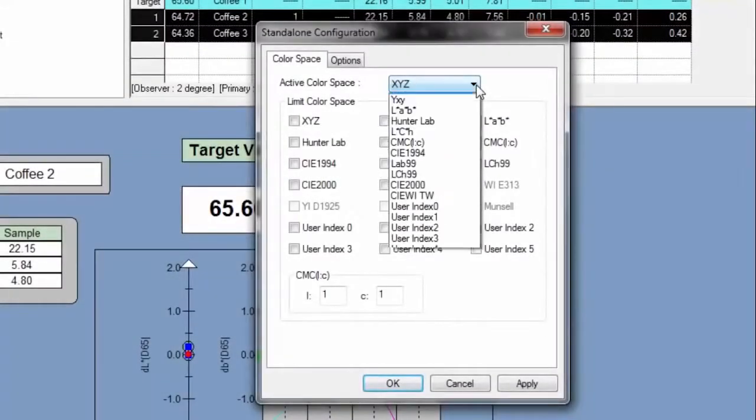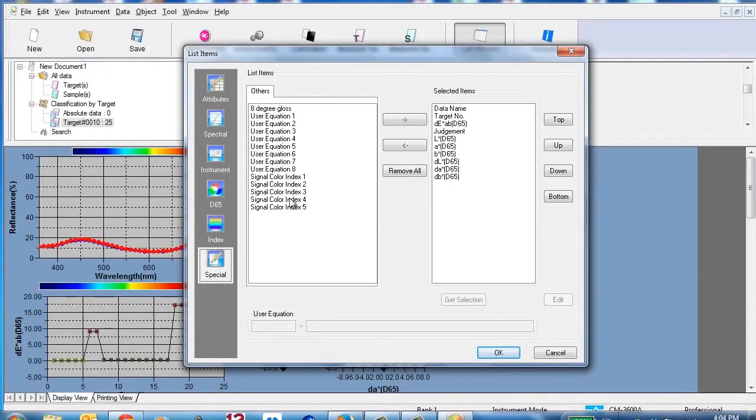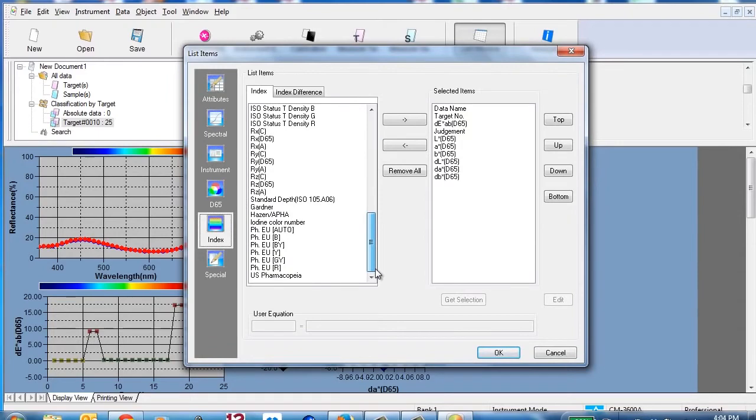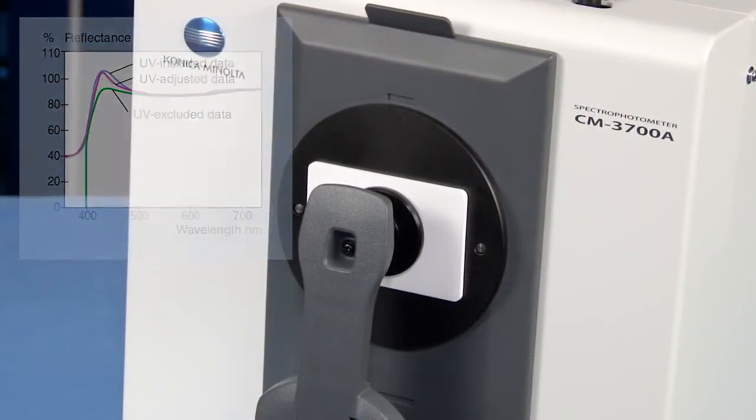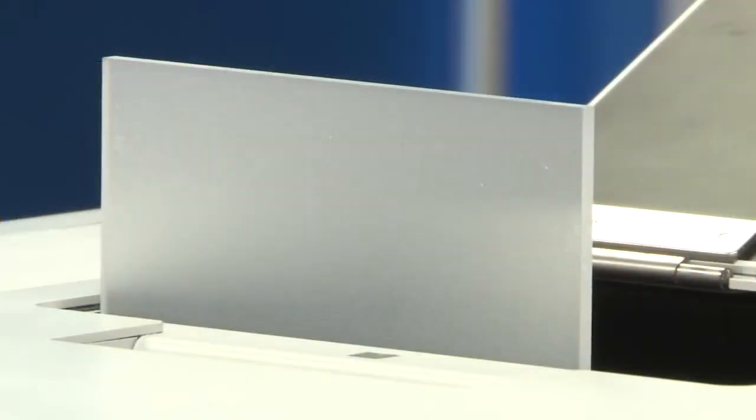Measure samples in any of eight universally accepted color spaces and configure up to eight customized color equations. Select from 16 illuminates and up to 40 indices to determine distinct color and appearance properties including brightness, whiteness, yellowness and haze.